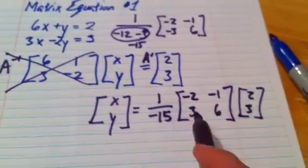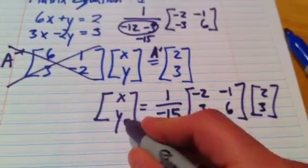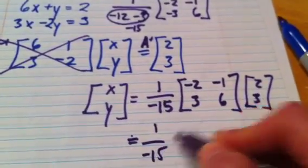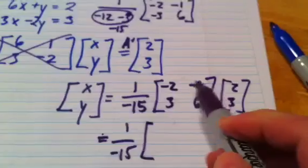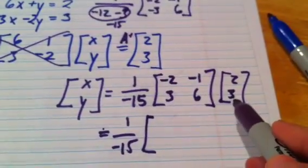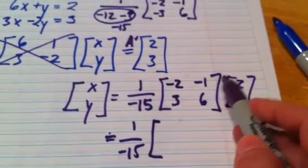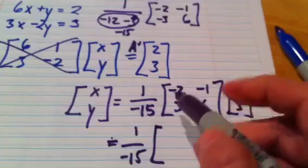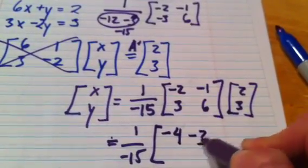So all we have to do is simplify this mess to get what x and y are. So this 1 over negative 15 is just going to chill there while I do this matrix multiplication. So multiply this with this, that's negative 4 minus 3.